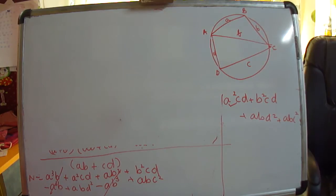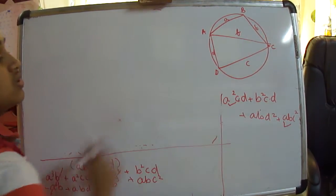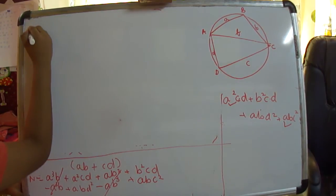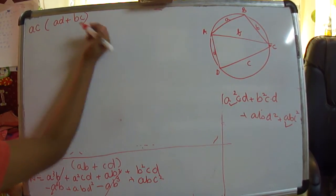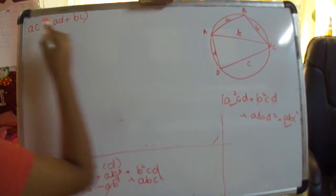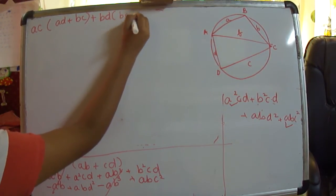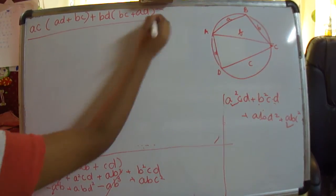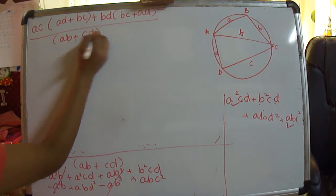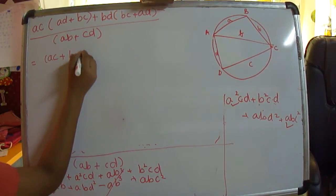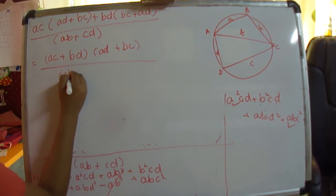Taking the first two terms and the last two terms and grouping them: from the first pair we can factor out AC, giving AC·(AD plus BC); and from the second pair we can factor out BD, giving BD·(BC plus AD). So F² equals (AC plus BD)(AD plus BC) divided by (AB plus CD).